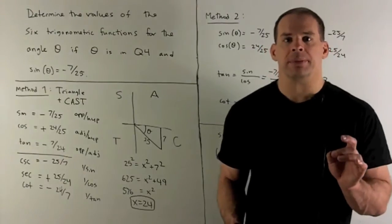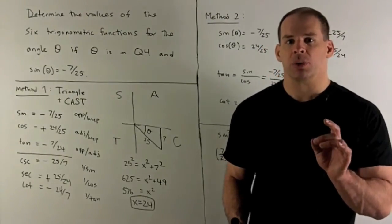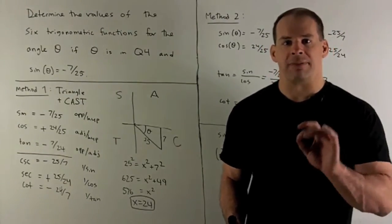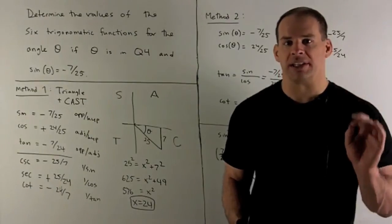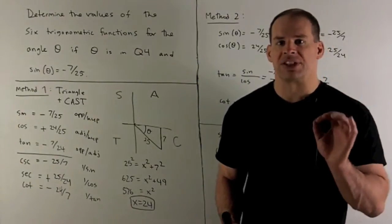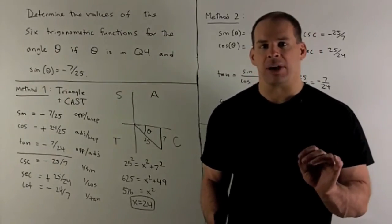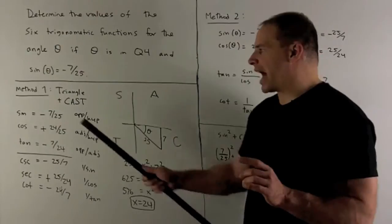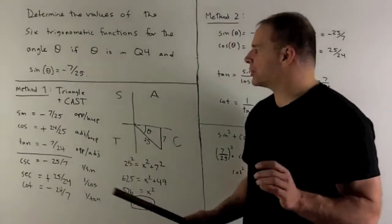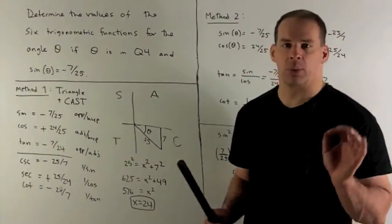Now I can start filling things in. So the idea is, first, we want to get the absolute value by function for sine, cosine, and tangent. Then we fill in the sign using the CAST method. Let's get the absolute values first. So sine, opposite over hypotenuse, so 7 25ths. We already knew that.